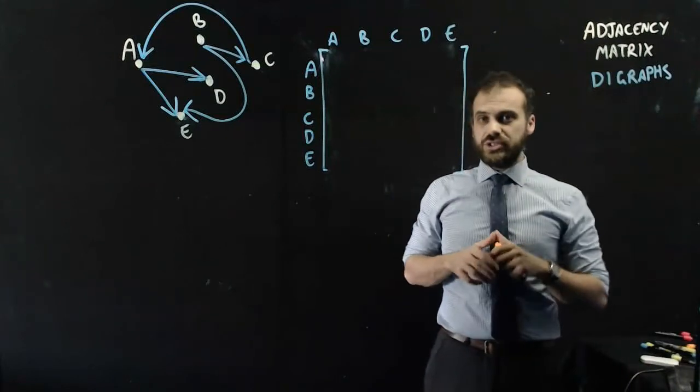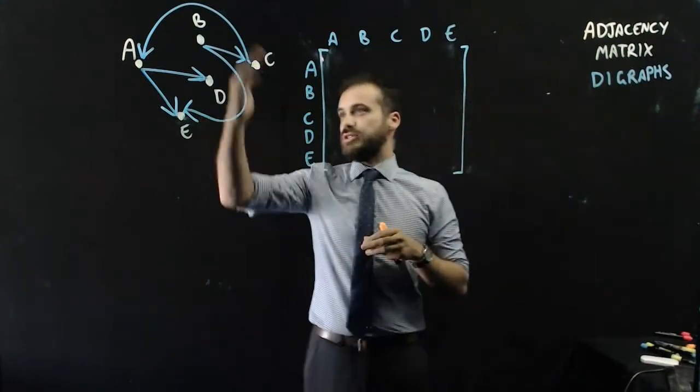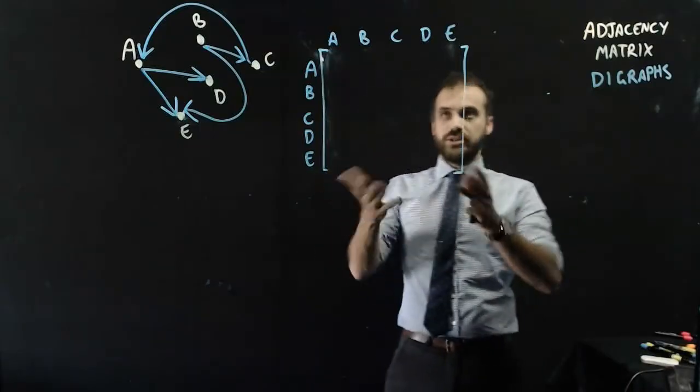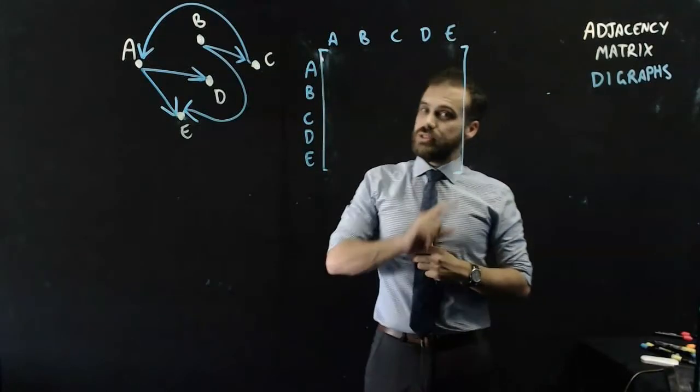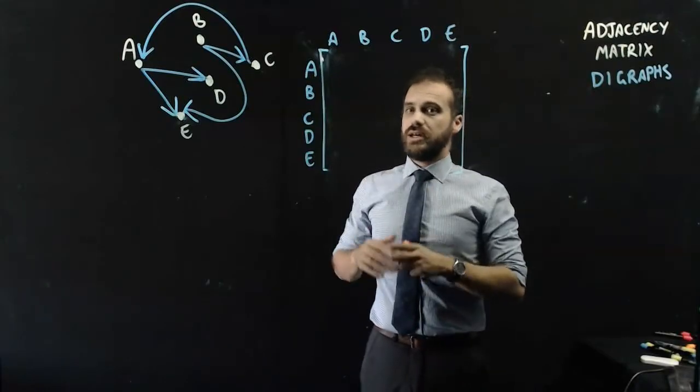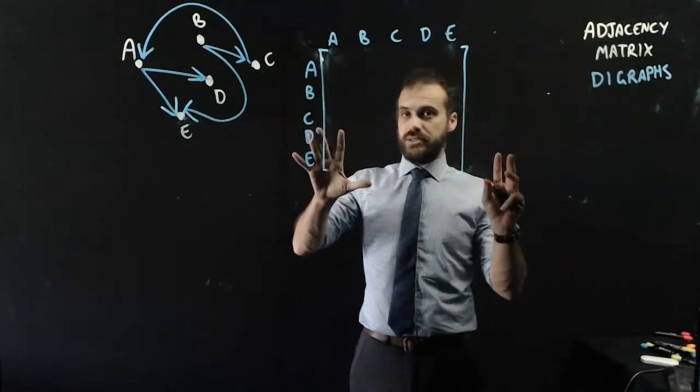Another look at adjacency matrix, this time for a diagraph, a directed graph. We're still going to create an adjacency matrix like we did before, but this time we need to consider that it's not going to be symmetrical.